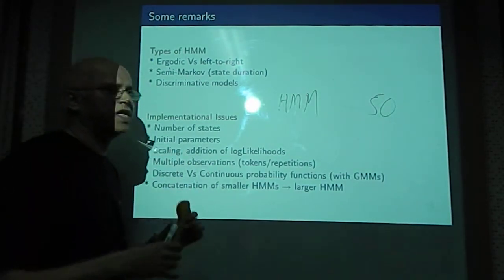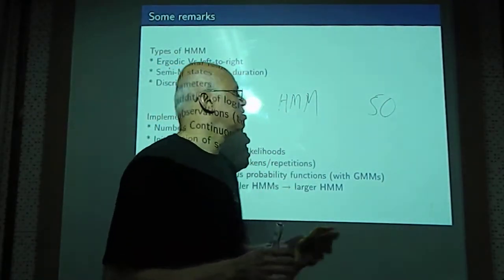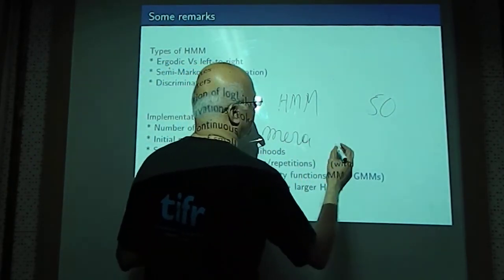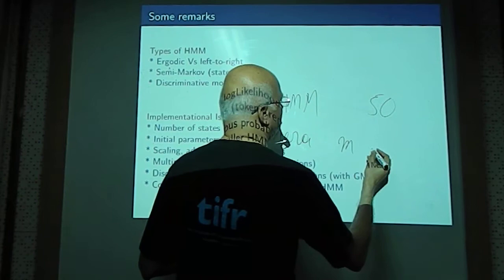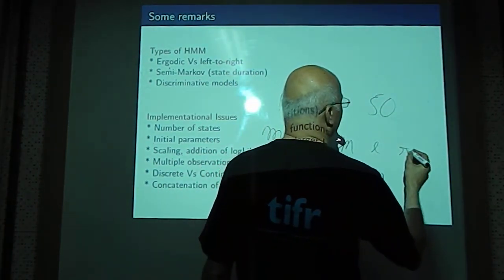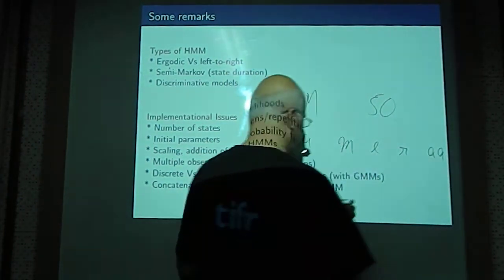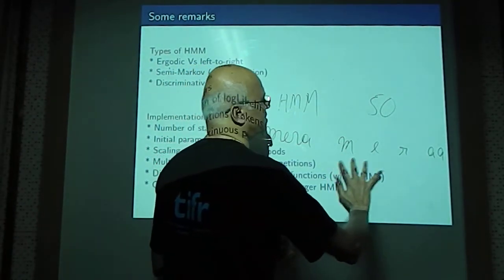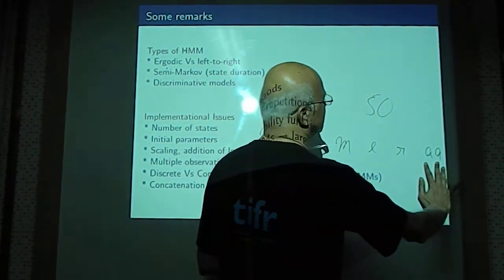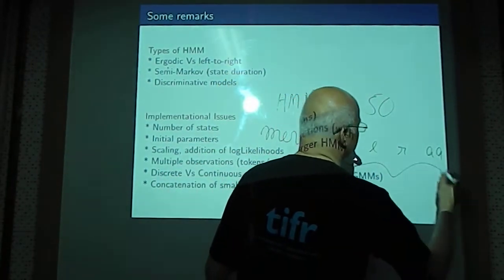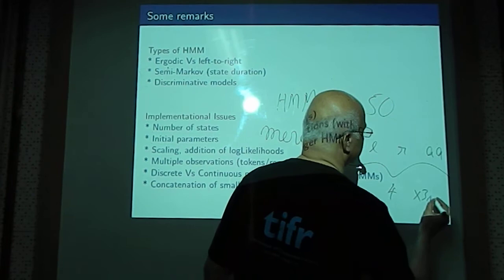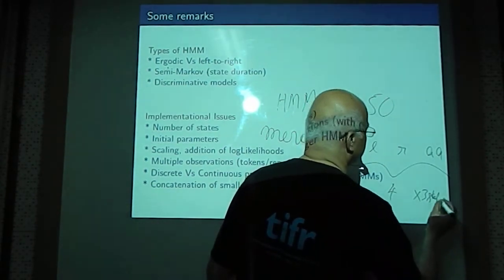If you want to construct a word, when you want to recognize a word such as the word Mera, then it is consisting of a sequence of four phonemes, and each phoneme is associated with one HMM. There are three states here, three states here, three states here, and three states here. So totally, this word HMM consists of four phonemes into three states, that is equal to 12 states.